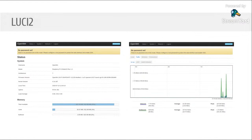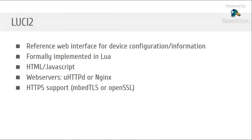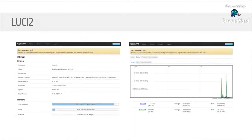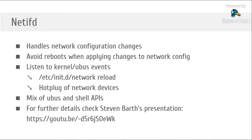Here are examples of LuCI screens. The first on the left shows system configuration information, and on the right you see the traffic load on the br-lan interface. It's a simple reference interface — if you want to integrate OpenWRT into commercial devices, you may want to implement your own web interface, but you can use LuCI as a reference. Just be aware of the licenses.